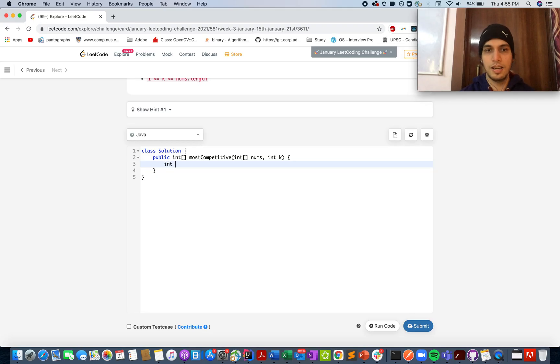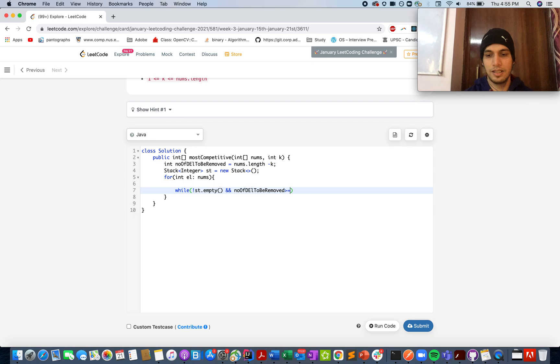Defining a new variable: number of elements to be removed equals nums.length minus k. And let's define a new stack: Stack<Integer> st = new Stack<>();. And let's start the iteration over the input array. While the stack is not empty, till the time the stack is not empty and the number of elements to be removed is greater than 0...